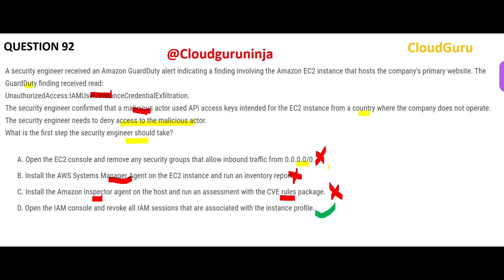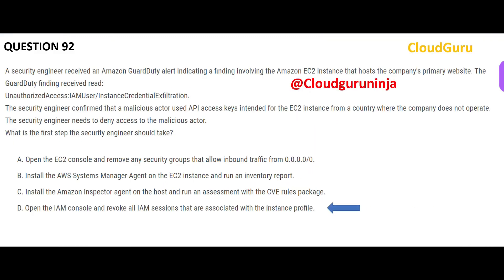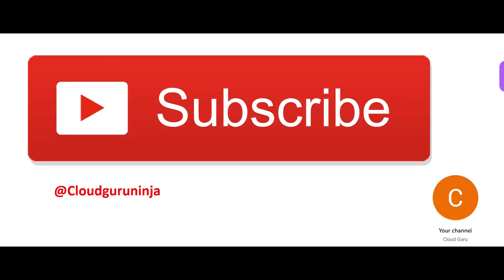The first thing you have to do is remove all access that the malicious actor had. They used API keys intended for EC2 from a different country — possibly someone else's access keys. Option D says to open the console and revoke all IAM sessions associated with the instance profile. The instance profile passes the IAM role to the EC2 instance, so you have to take action there first. This is my final answer.